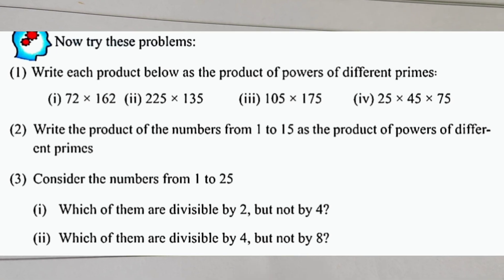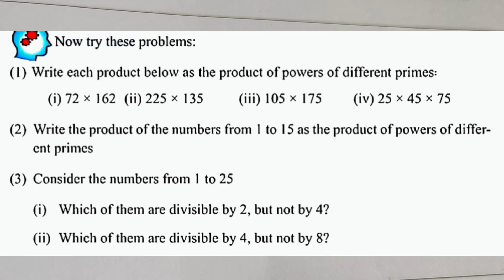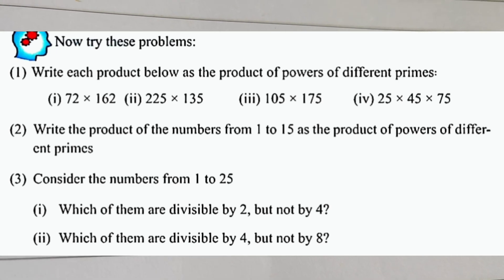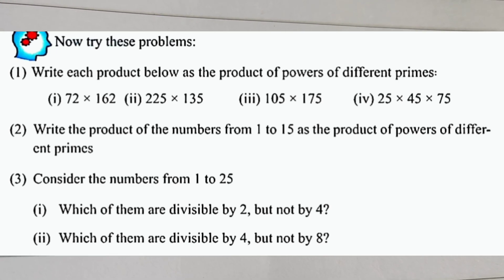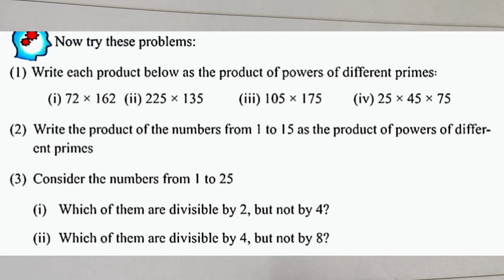We are going to write the product of the numbers 1 to 15 as the product of powers of different primes.